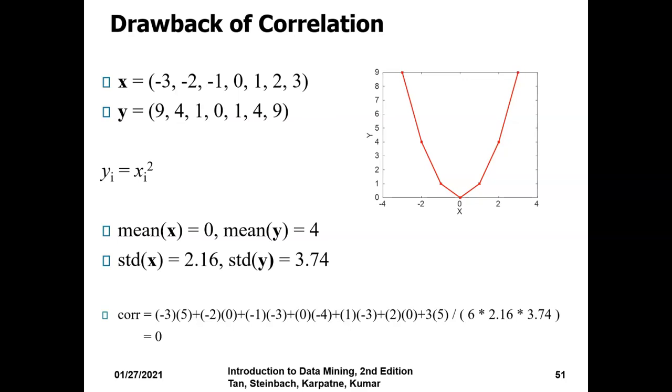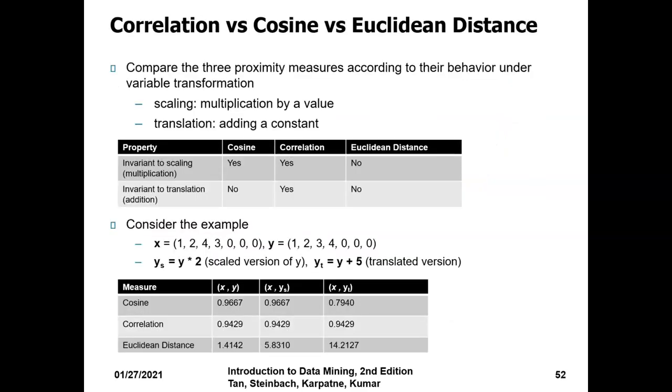Correlation versus cosine versus Euclidean distance. These three are compared here. They have different properties like invariant to scaling. Cosine has a scaling property, correlation has a scaling property, but Euclidean doesn't have a scaling property. Invariant to translation addition: cosine doesn't have this property, correlation has it, and Euclidean distance doesn't have this property. There are certain examples given below.